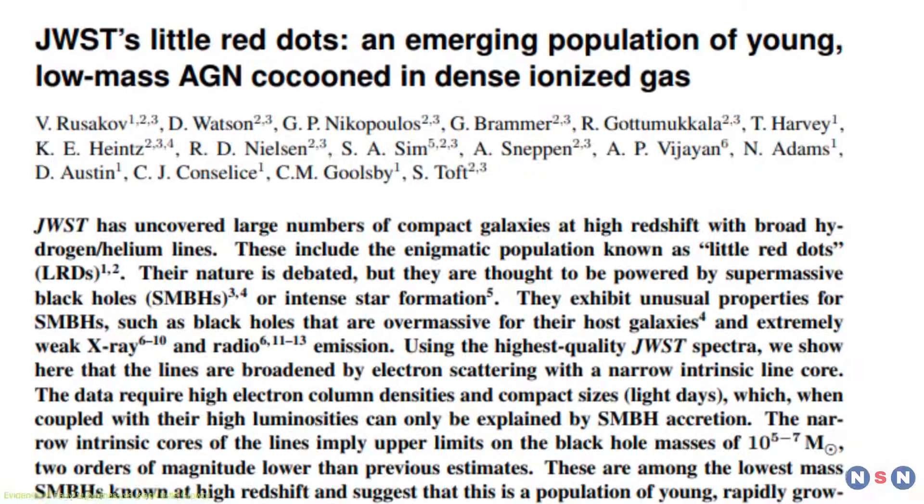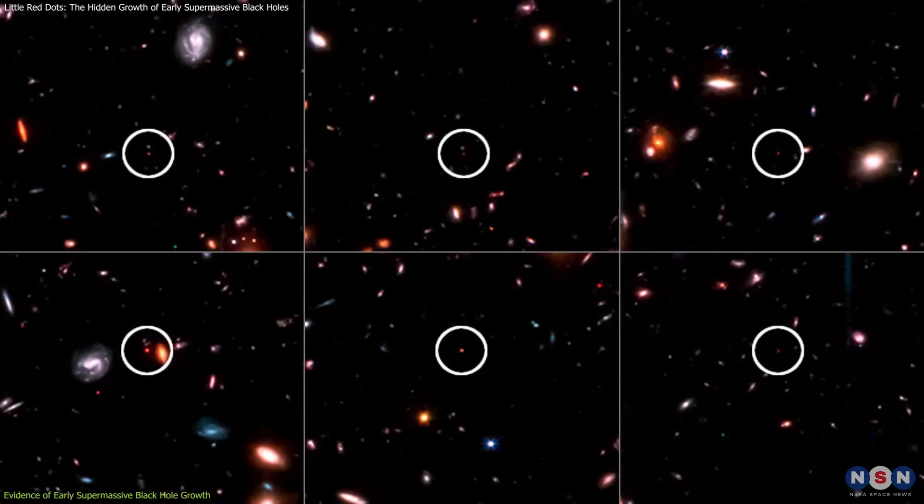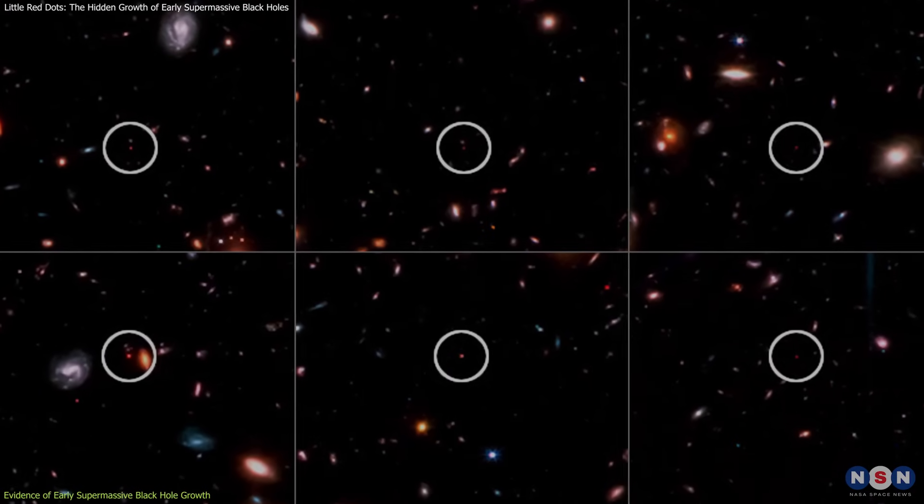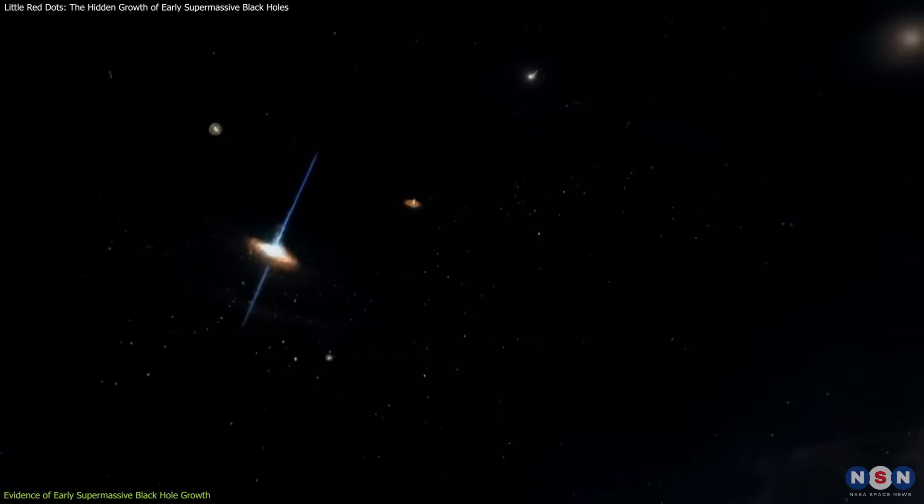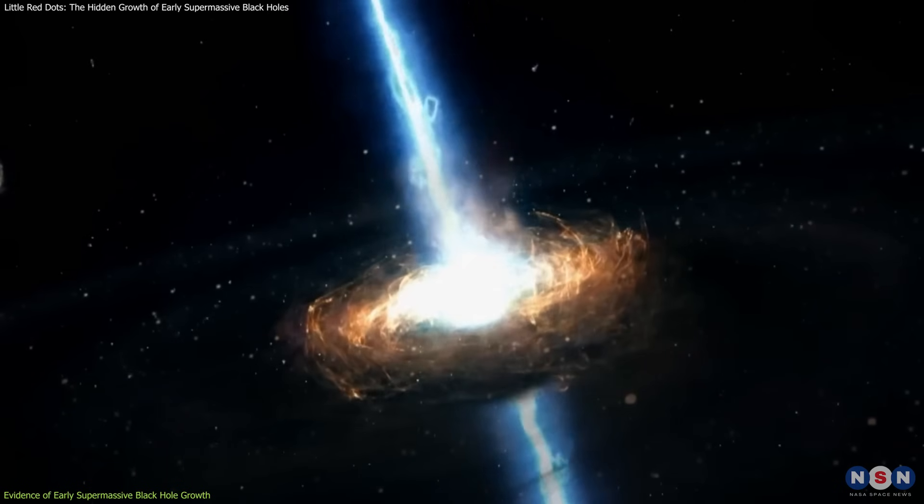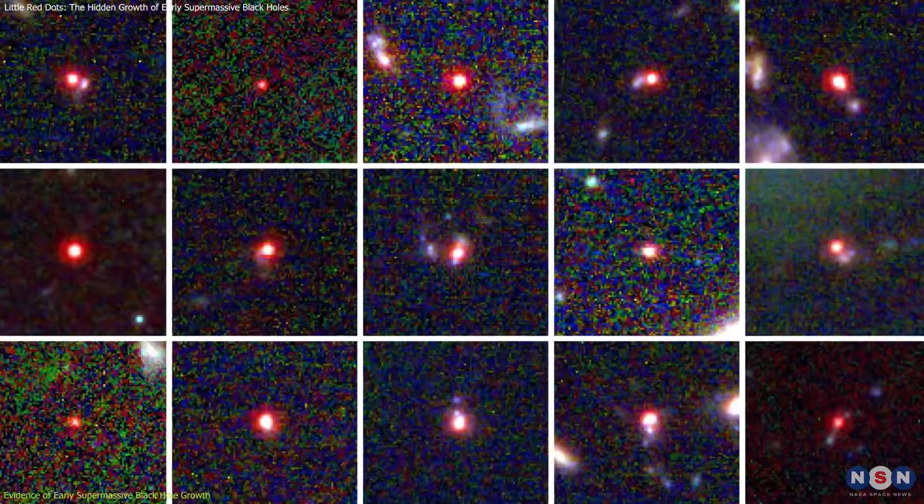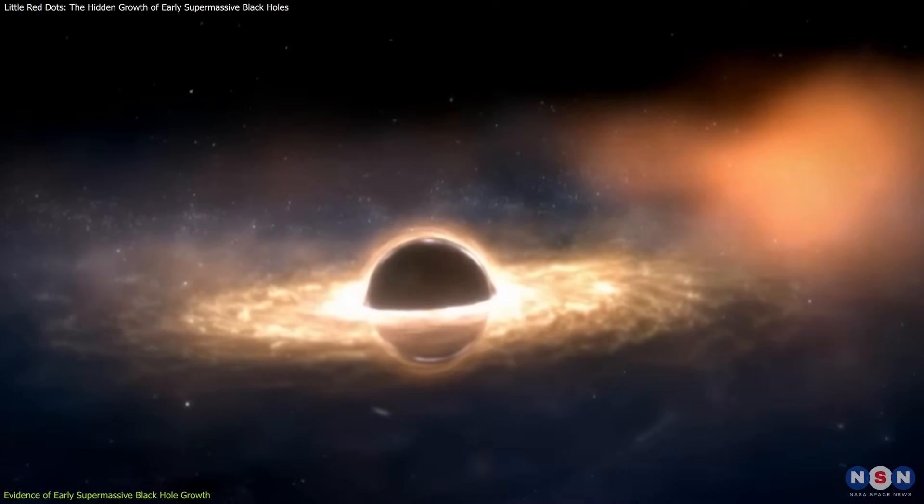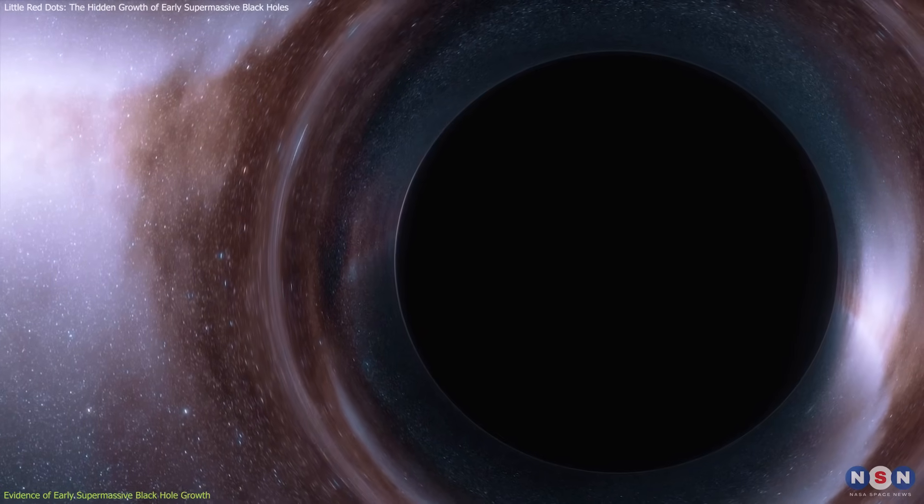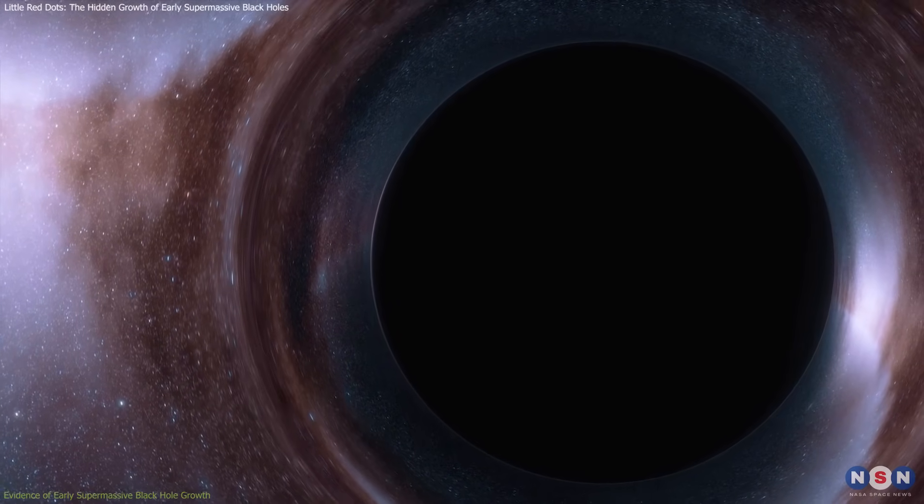If this hypothesis is correct, LRDs could represent a crucial missing link in our understanding of black hole formation. It has long been a mystery how black holes in the early universe grew so rapidly in such a short time. LRDs provide a direct glimpse into these earliest growth phases, showing us how some of the largest objects in the universe began their journey billions of years ago.